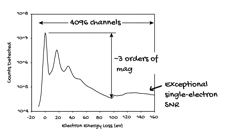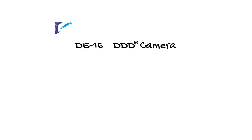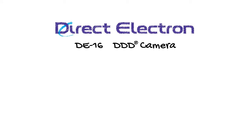Let me introduce you to the DE-16 direct detection camera, built around our 10th generation DDD sensor technology, which is only available from our company, Direct Electron. The DE-16 has 4096 by 4096 pixels, giving you 4K channels for your EEL spectrum. It delivers high signal-to-noise ratio with single-electron sensitivity.